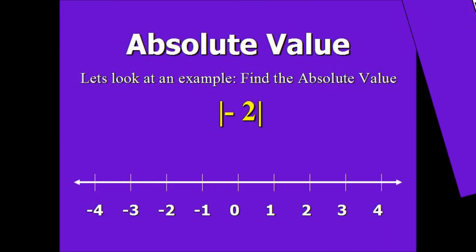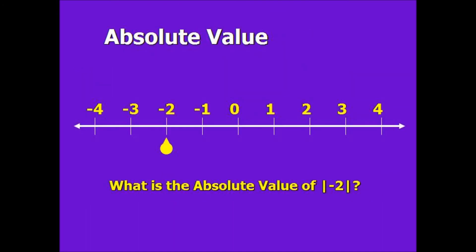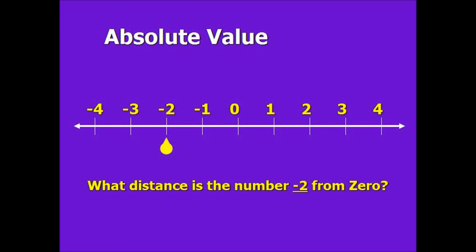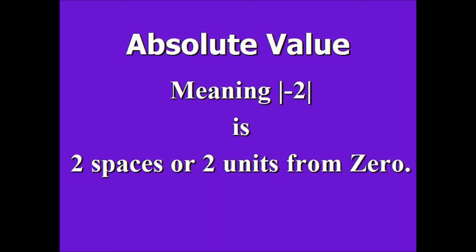Here's a negative number. We want to find the absolute value of negative 2. What is the absolute value of negative 2, or what distance is the number negative 2 from zero? We move one space from negative 2, two spaces until we get to zero, meaning negative 2 is two spaces or two units from zero.